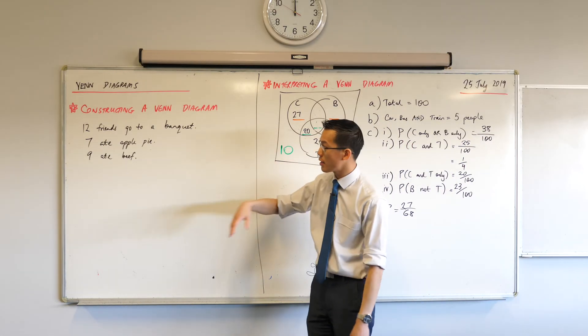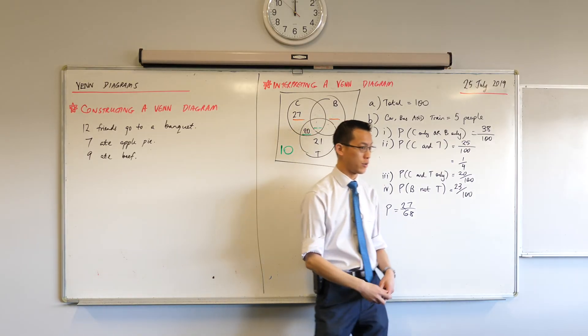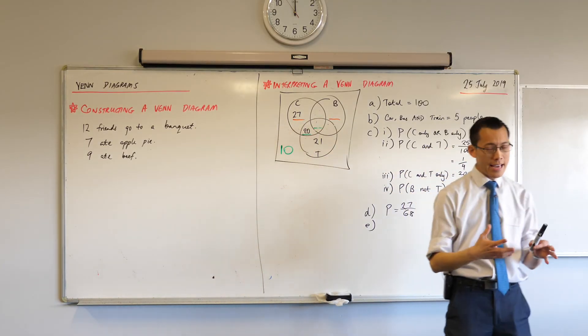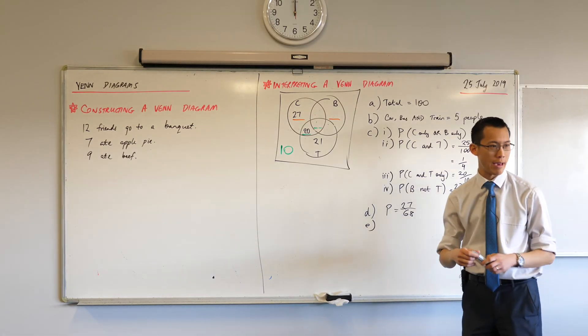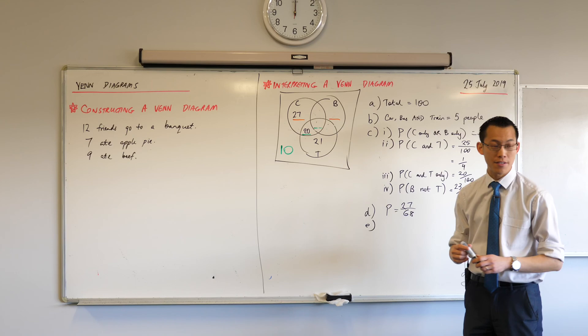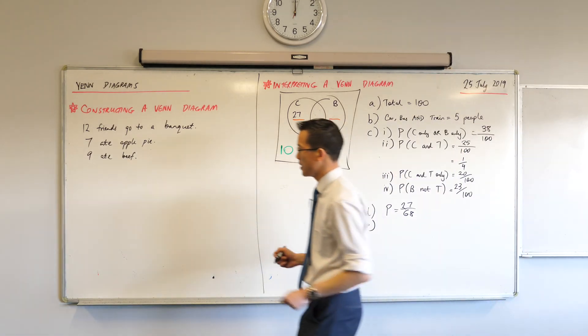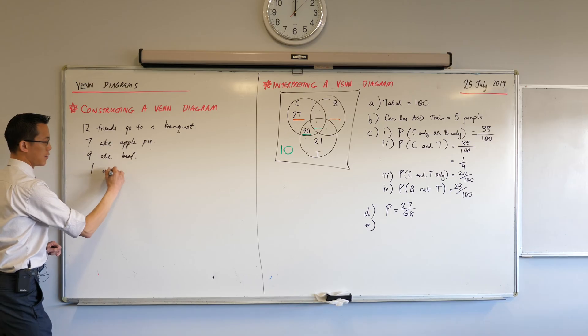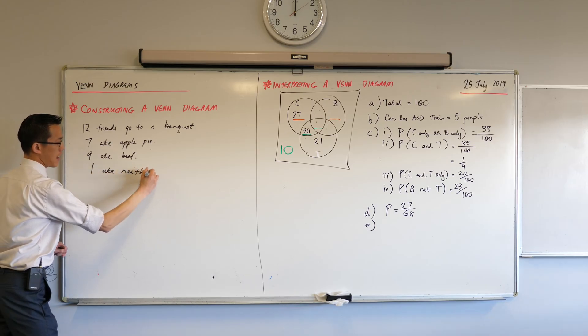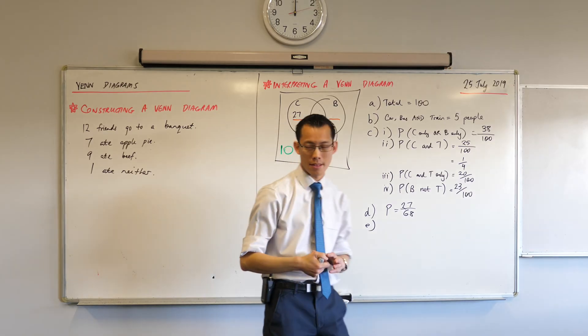Let's imagine we've got 12 friends, and they all attend a banquet together. Then you get some information about what the friends ate during the banquet. You've got seven of them who ate apple pie, nine of them who ate beef, and the last of these, I didn't get to write down the four, is there was one who ate neither.